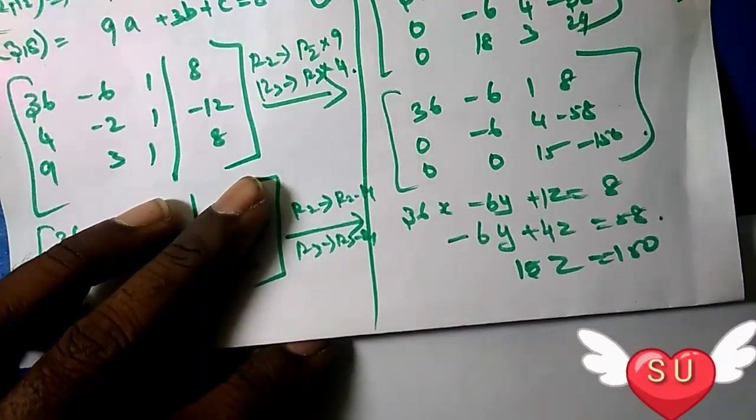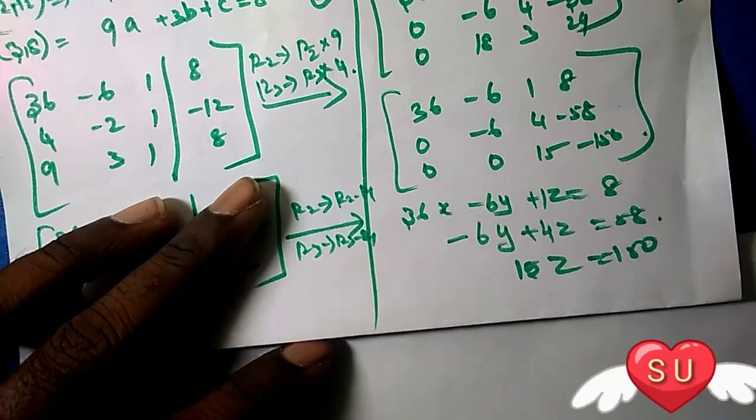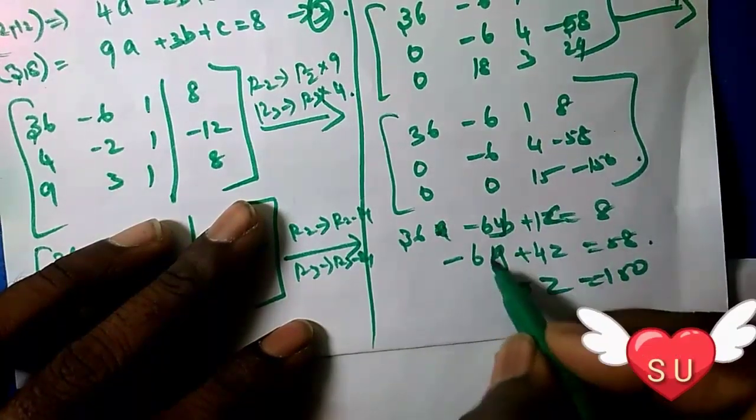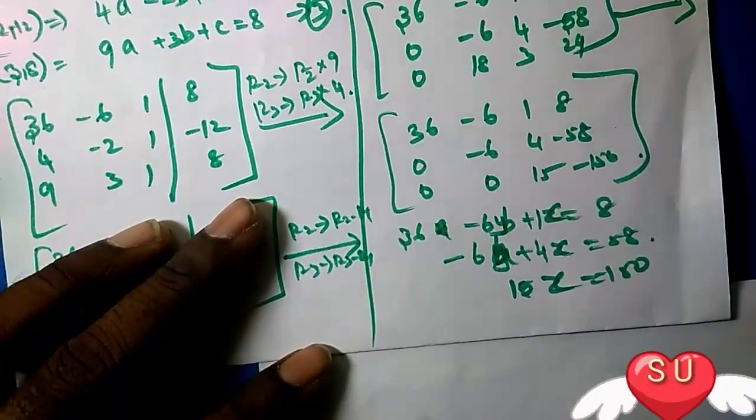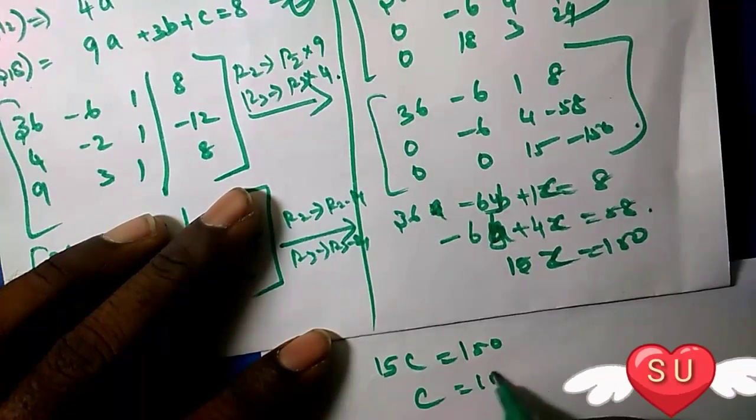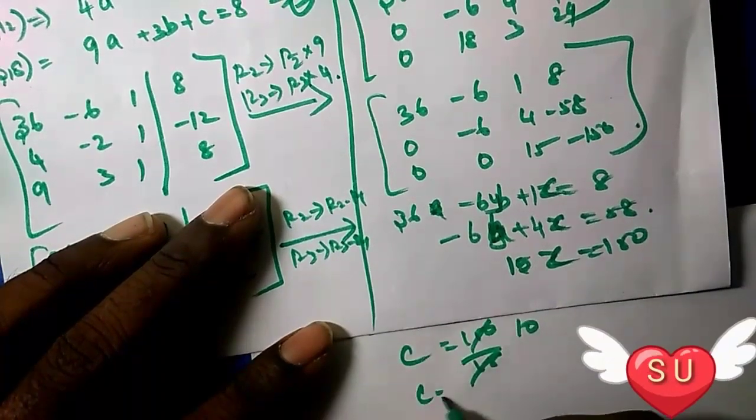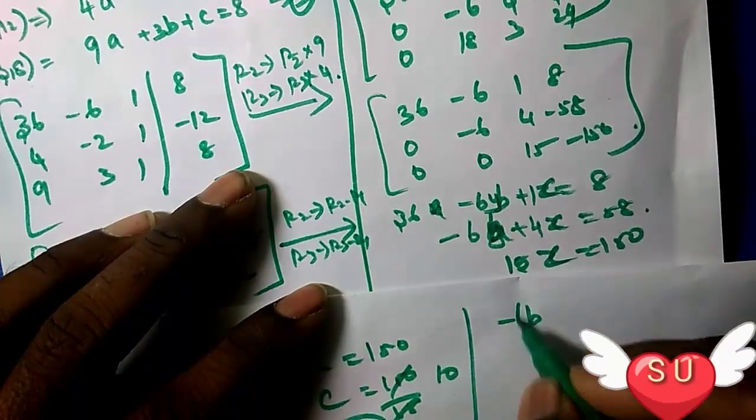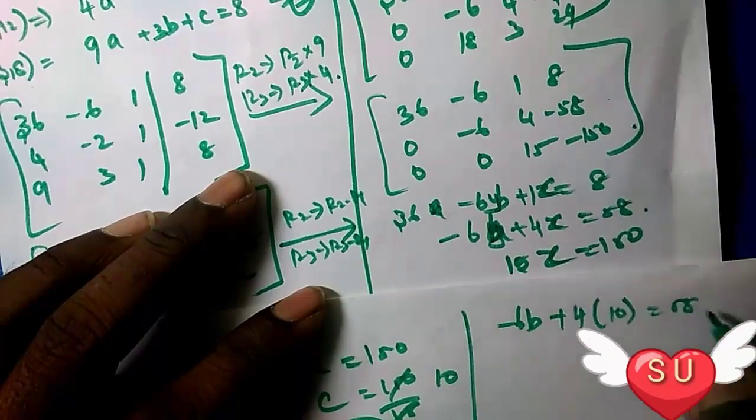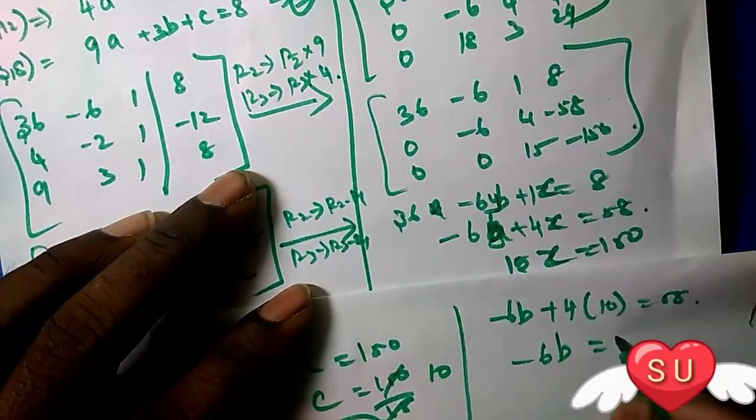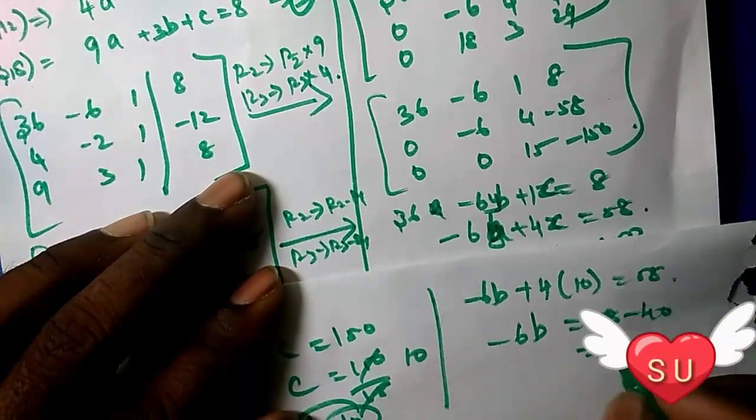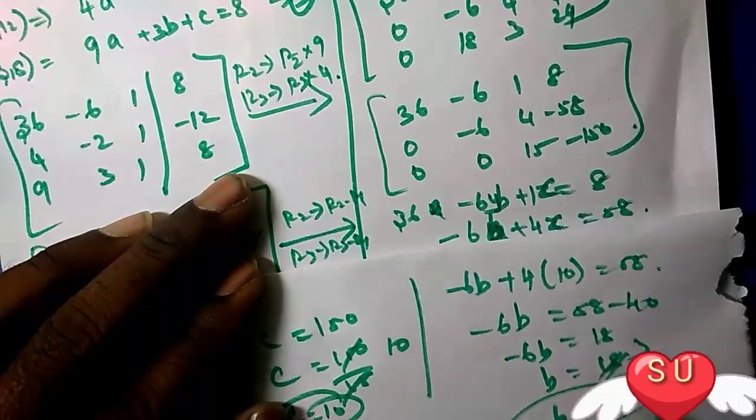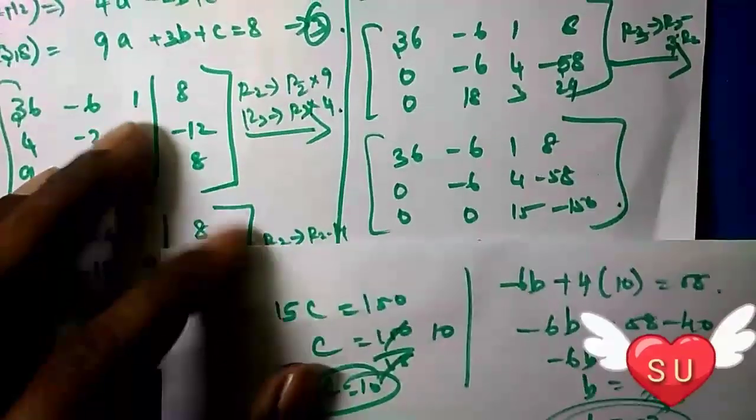Now we solve for the variables. From 15c = -150, we get c = -150/15 = -10, so c = -10. From the second equation: -6b + 4c = -58. Substituting c = -10: -6b + 4(-10) = -58, so -6b - 40 = -58, giving -6b = -18, therefore b = 3.